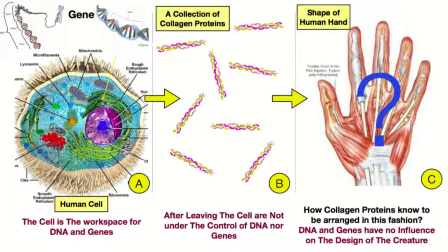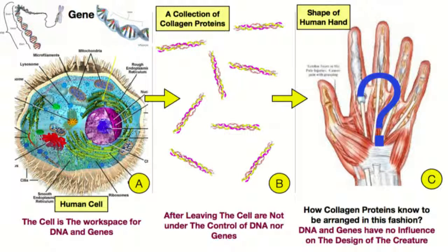As you can see on the screen, let's go from left to right. On the left we have the cell, which is the workspace of genes and DNA — meaning genes and DNA can only work within the cell. When DNA is read, proteins are produced and excreted outside of the cell. Let's take the collagen protein as an example. In the middle we have millions and millions of collagen proteins outside of the cell.